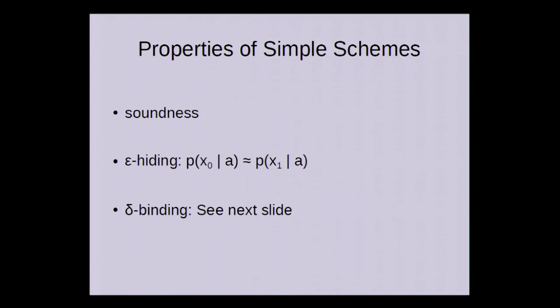Now we want the commitment schemes to have the following properties. First, soundness, which just means if everybody's honest, then Alice will accept in the end. The hiding condition, which means that conditioned on any a, x0 and x1 need to be statistically close, so that Alice can't get much information about b ahead of time. We say that a scheme is perfectly hiding if the two variables are distributed identically.